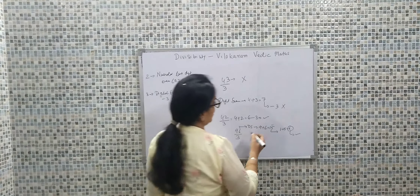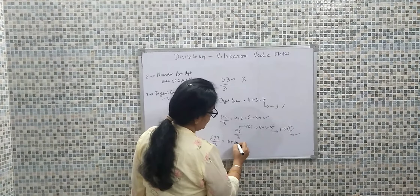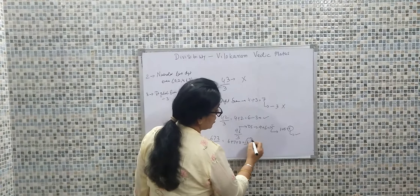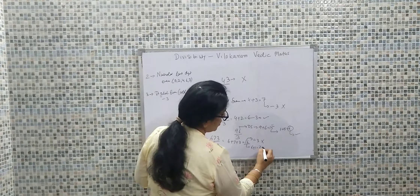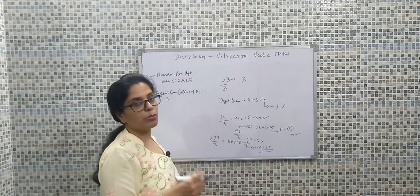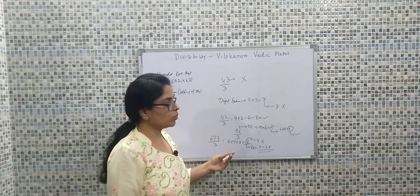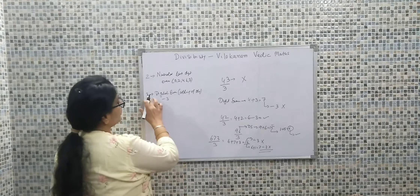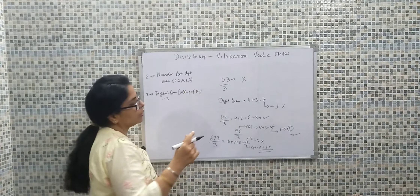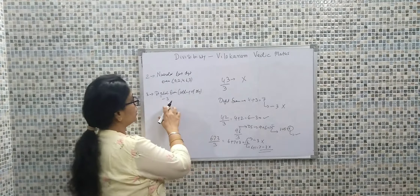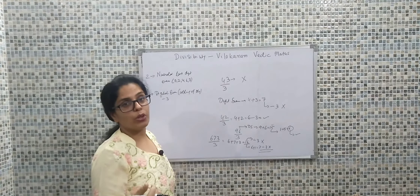Let's take another example: 673. Whether this number is divisible by three or not. Six plus seven plus three comes out to be sixteen. Sixteen is not divisible by three. If you further proceed: six plus one is seven, and seven is not divisible by three. So by simple observation — adding all the digits of the numerator — we can conclude whether the number is divisible or not. We add until we get a single digit, then check if that digital sum is divisible by three.